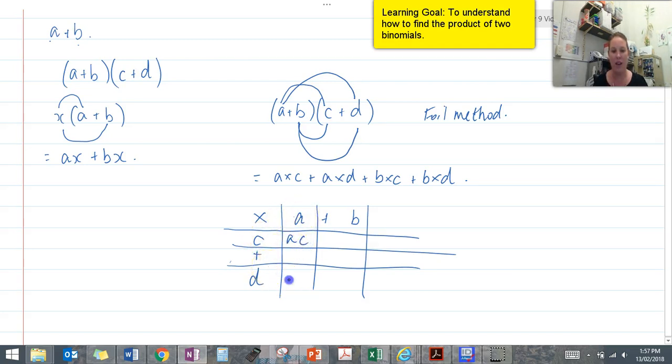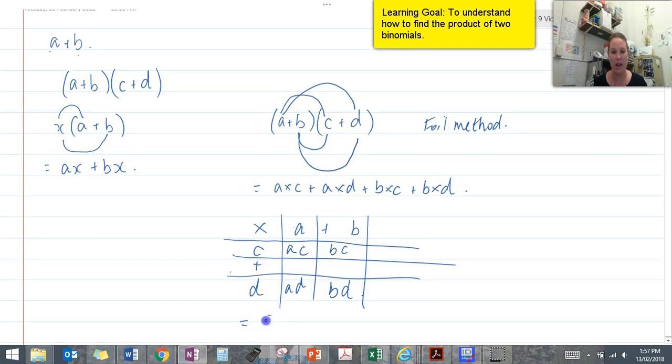d times a is ad, c times b is bc, and d times b is bd. And then we add all of those values together. So there we get the same answer. So it would be ac plus bc plus ad plus bd. Either of these methods can be used to determine a binomial product or do a binomial expansion.